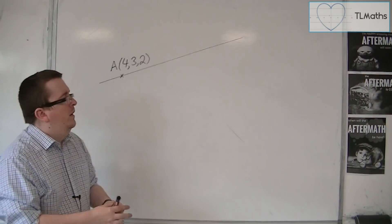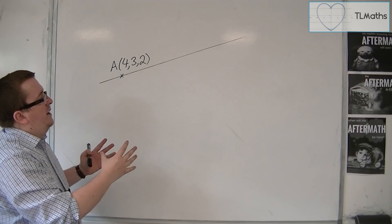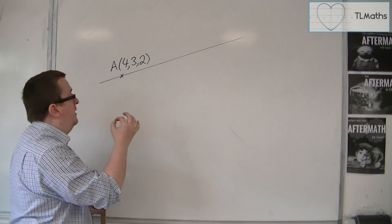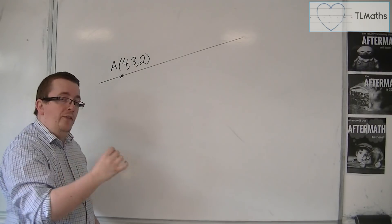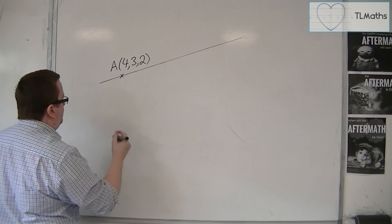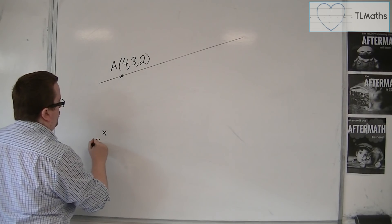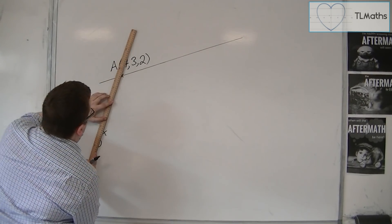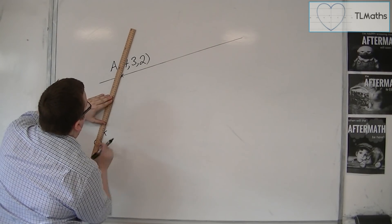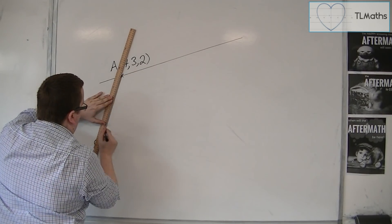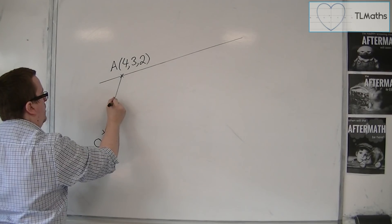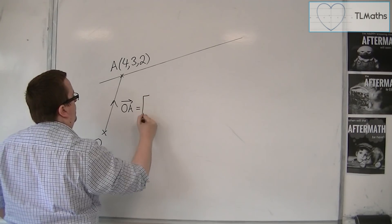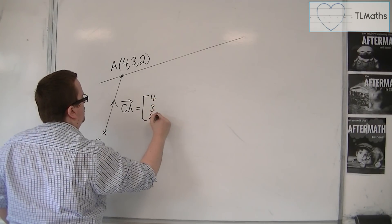So we know that this line is passing through a point and this coordinate A itself has a position vector. It has a position vector linking up with the origin O. So here is how I can get from O to A. That would be 4, 3, 2.